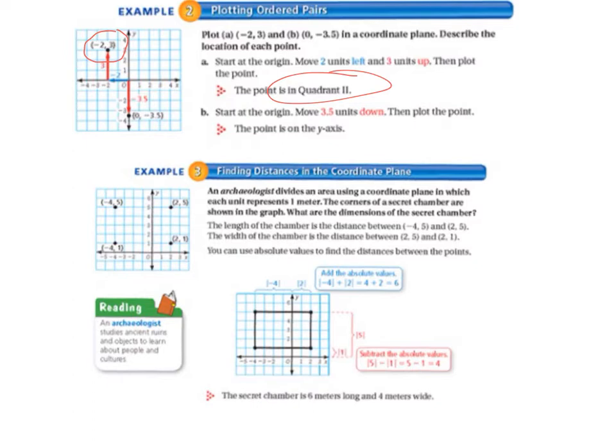And for letter B, we start at the origin again. That's where we should always start. And we move 3.5 units down. You'll notice we didn't go anywhere horizontally, and that's because our x-axis point was 0. So we went nowhere horizontally. And we just went down and plotted our point. The point is on the y-axis. So our point is there, and it's on the y-axis. So it's not actually in a quadrant. It is right between quadrants 3 and 4.